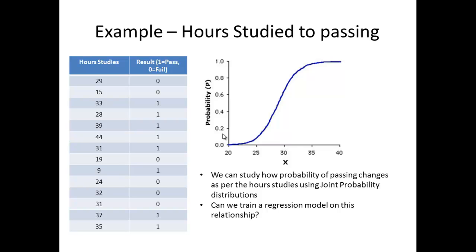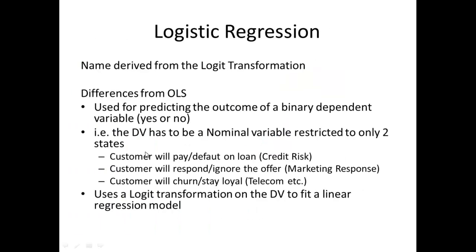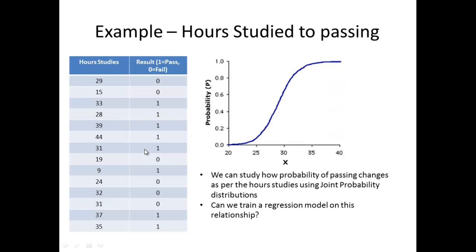Can we train a regression model on this relationship? Depending on the value of X - if I study for 30 hours and fit this model, this gives me a probability of 0.6 or 60 percent chance of passing this exam. If I study for only 25 hours, I have about 0.1 or 10 percent chance of passing the exam. And similarly, if I go ahead and study for 40 hours, I have virtually 100 percent chance, or let's say 99.999 percent chance of passing this exam.